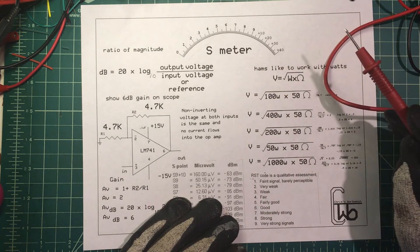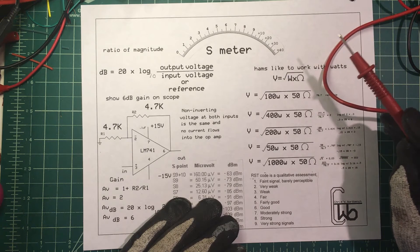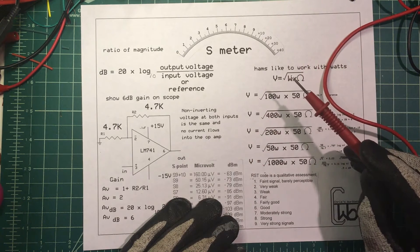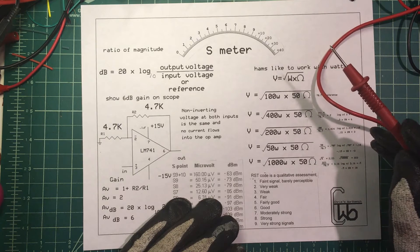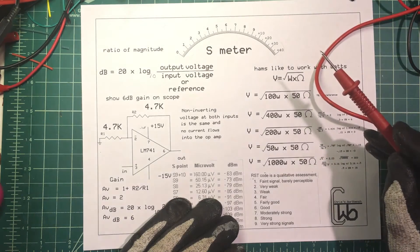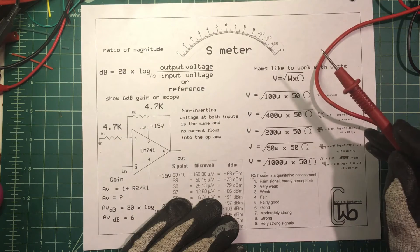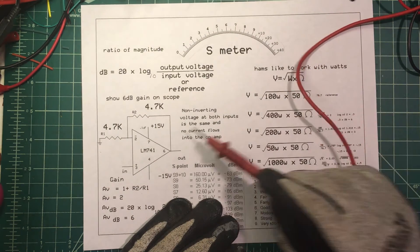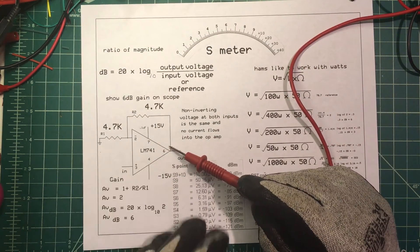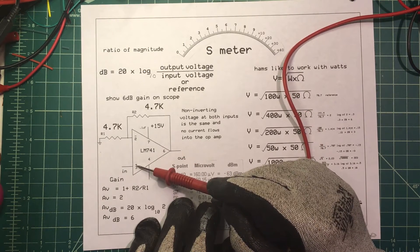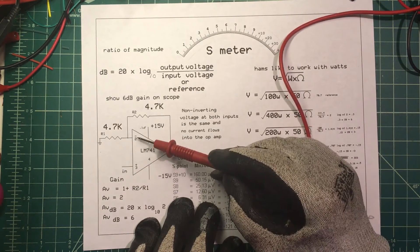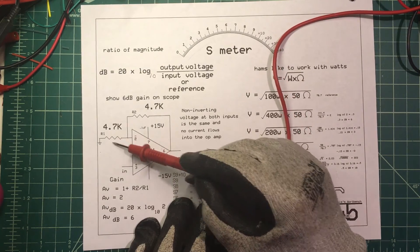I wanted to show what 6 dB looks like on a scope, so I used an op-amp, an LM741. In the data sheet they show a closed loop non-inverting configuration with a gain of 2, which would be perfect for us. Two rules for the op-amp are that no current flows through the amp, and that whatever voltage we put on the positive wants to be on the negative here.